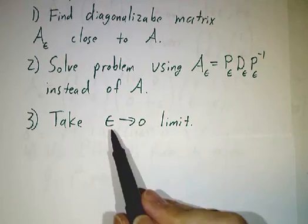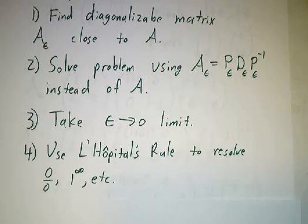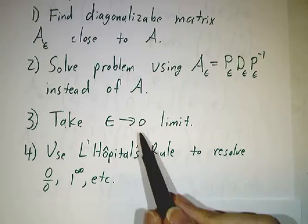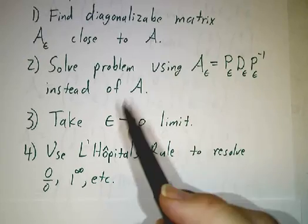So we take a limit as epsilon goes to zero. And typically when you take epsilon goes to zero, something's gonna go wrong, because you couldn't just take epsilon equal to zero, because that would have been non-diagonalizable.